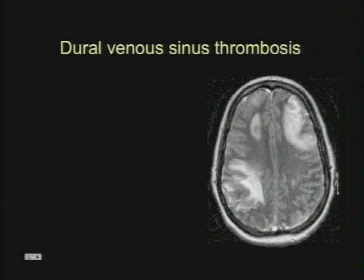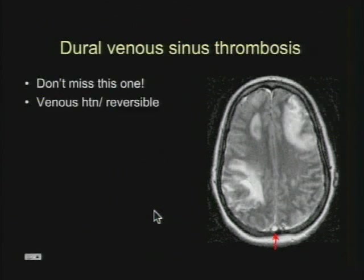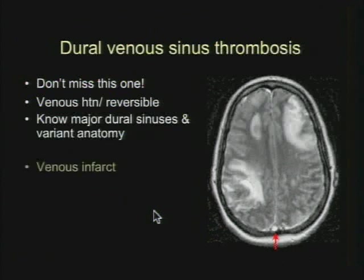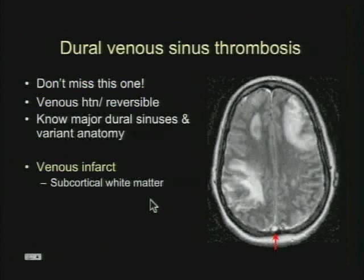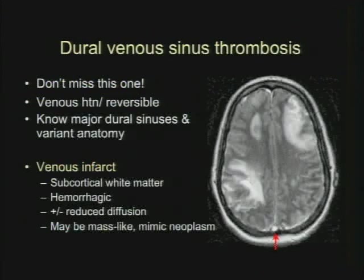Here's another case with fiducial markers — this patient is on the way to the OR for biopsy of multiple areas of mass-like T2 signal. But when you look closely, the flow void is gone in the superior sagittal sinus. These were enhancing and looking very mass-like, but this was dural sinus thrombosis. Venous hypertension can be reversible — another reason this is a do-not-miss diagnosis. Venous infarct is often in the subcortical white matter, won't follow an arterial distribution, is often hemorrhagic, diffusion can or cannot be reduced, and it can be mass-like and mimic neoplasms.